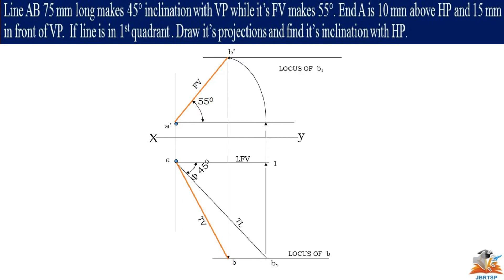There is a locus of B dash. We can also draw the true length from A dash as center by using your compass. This time we can draw the line.